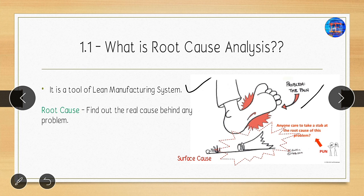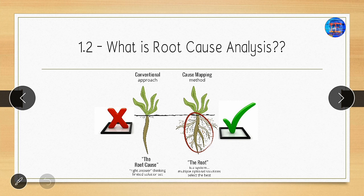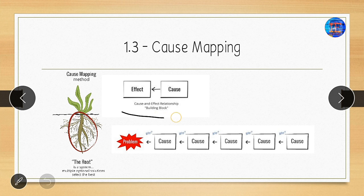We should not attack on the surface cause because if we do, we cannot solve the problem. Root cause analysis uses a cause mapping method. There are two approaches: the conventional approach and cause mapping. We should not use the conventional approach — that is just thinking the answer based on experience. We should do proper cause mapping, finding the cause-and-effect relationship.